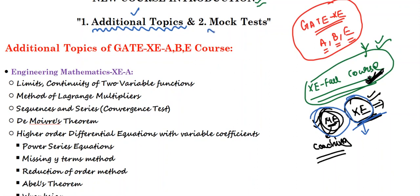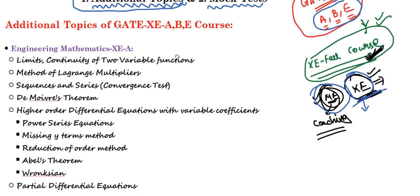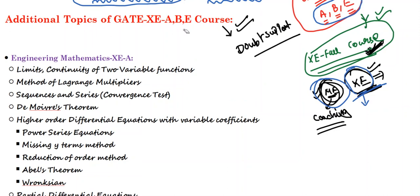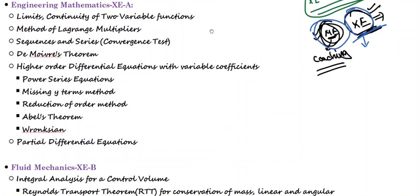We also have a mock test for these three — A, B, and E. Let me first concentrate on the additional topic course, and later I'll go to the mock test. These are the topics which are going to be covered in the additional topic course. The course link is in the description — you can directly go to the link and join. All the features for individual subject courses will be there, such as doubt support and video solutions.